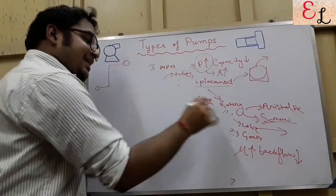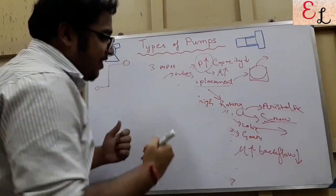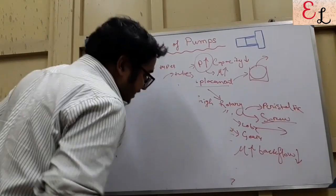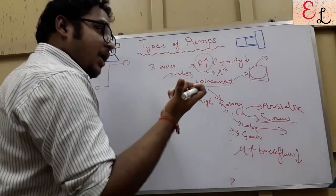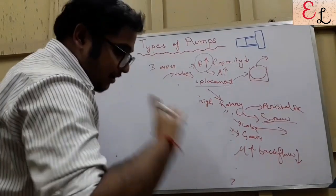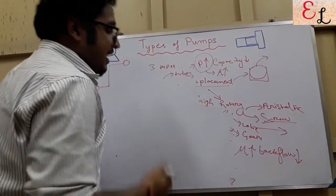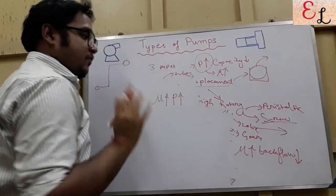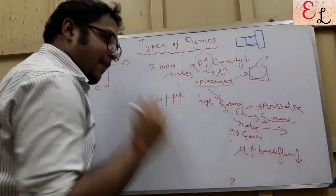Both the reciprocating and the rotary types take in the fluid, keep it for some time, press it to create pressure, and then release it at high pressure. It is discharging at some point in time and then static at another — compressing the fluid. It is used for high viscosity fluid and where high discharge pressure generation is needed, along with low capacity.